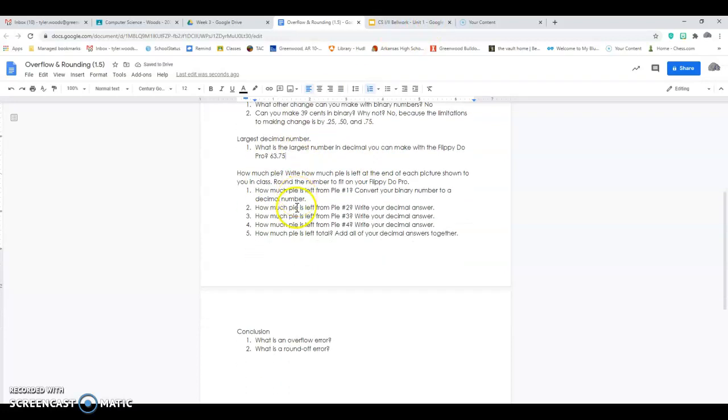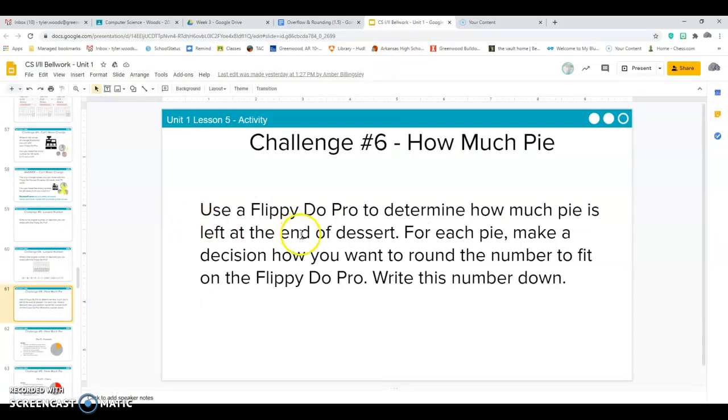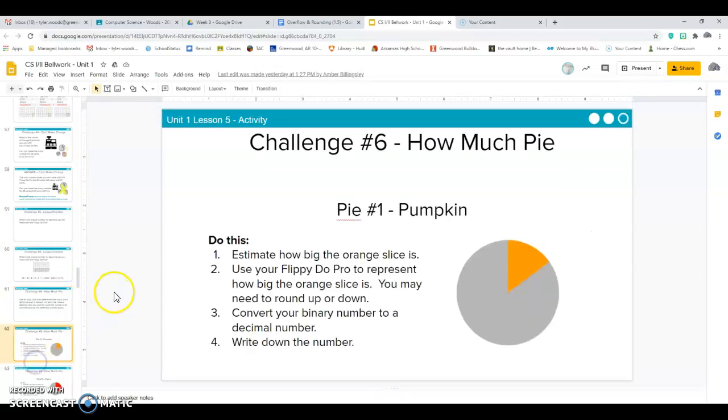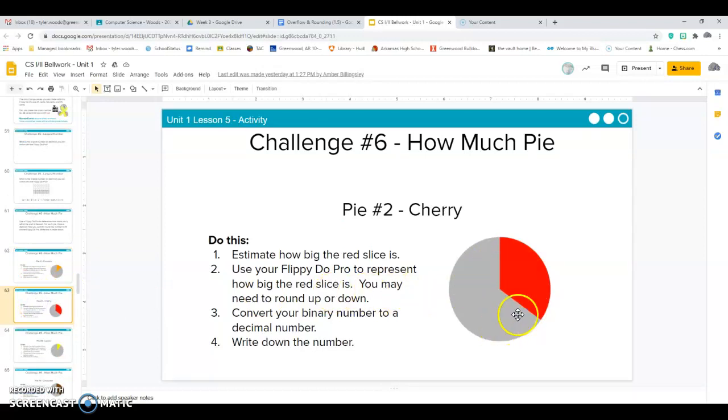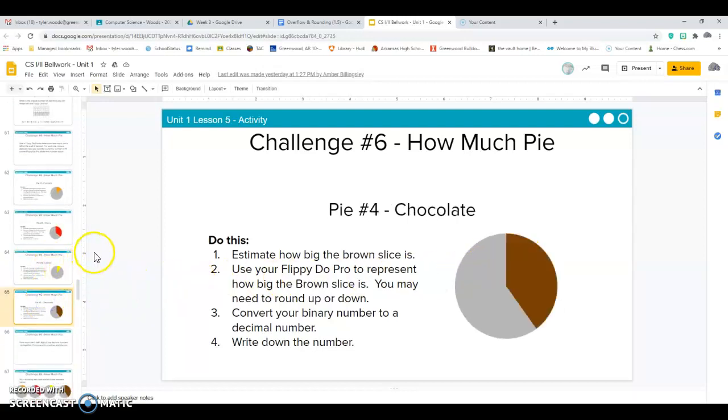All right, the last part right here says, use a flippy do pro to determine how much pie is left at the end of dessert. For each pie, make a decision on how you want to round the number to fit the flippy do pro. Write this down. So this one right here goes like this. You guys can look at this and you're going to have to choose, do you think this is like 0 right here, closer to 0 or do you think it's closer to .25? Whatever you choose, you write it down. So I'm going to say for this one, I'm going to write one down. All right, if you guys want to round up here or round back to 25, if you round this one to 25, your last one probably needs to be 0. It's your choice how you want to round it. How would you round this one? And how would you round this one?